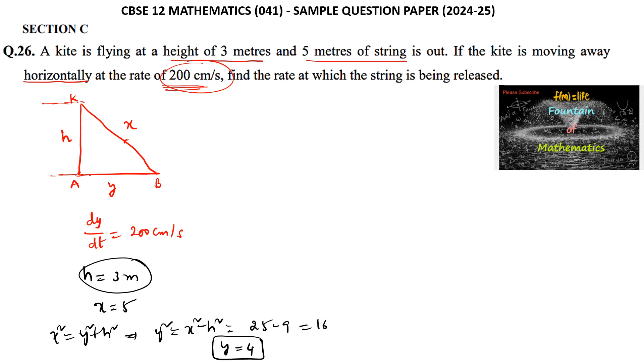Now using the relation X² = Y² + H², where H is constant (H² = 9), differentiating with respect to t: 2X(dX/dt) = 2Y(dY/dt).